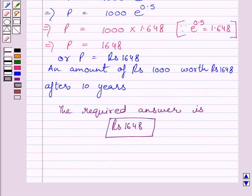So, we get an amount of rupees 1000 is worth rupees 1648 after 10 years. This is our required answer. This completes the session. Hope you understood the solution. Take care and have a nice day.